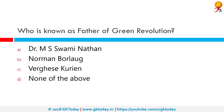Who is known as the father of the Green Revolution? Option A is Dr. M.S. Swaminathan, an Indian geneticist and international administrator renowned for his leading role in India's Green Revolution, also known as the father of the Indian Green Revolution. Option C, Varghese Kurien, is known as the father of the White Revolution in India because he revolutionized the dairy industry. However, the correct answer is option B: Norman Borlaug, an American agronomist and humanitarian who led initiatives worldwide that contributed to the extensive increase in agricultural production termed the Green Revolution. He is known as the father of the Green Revolution.